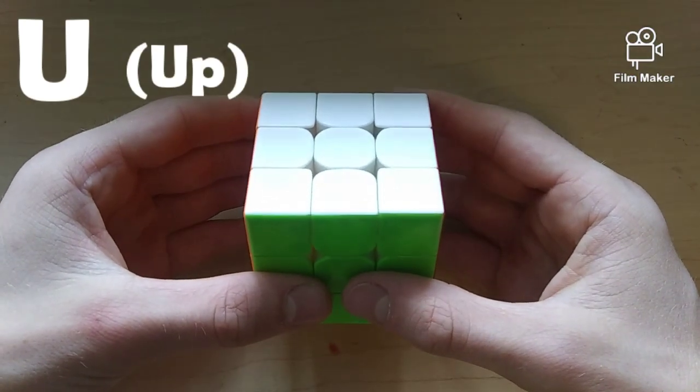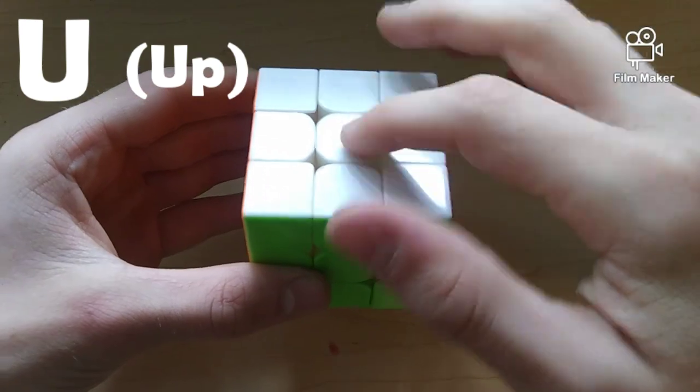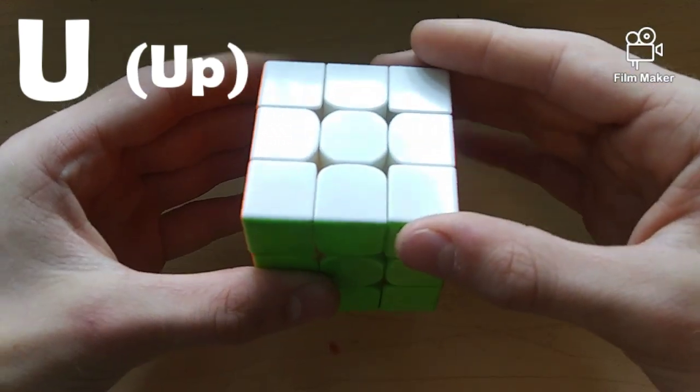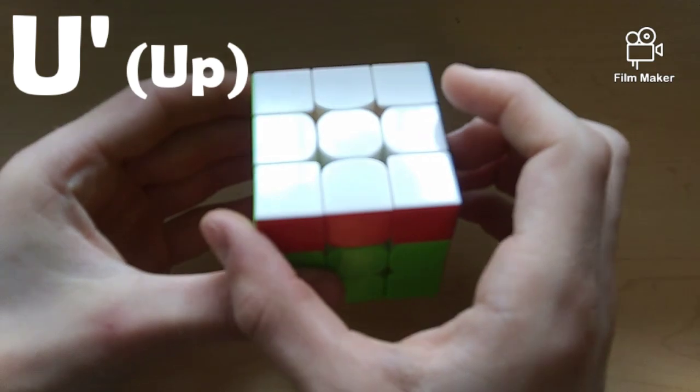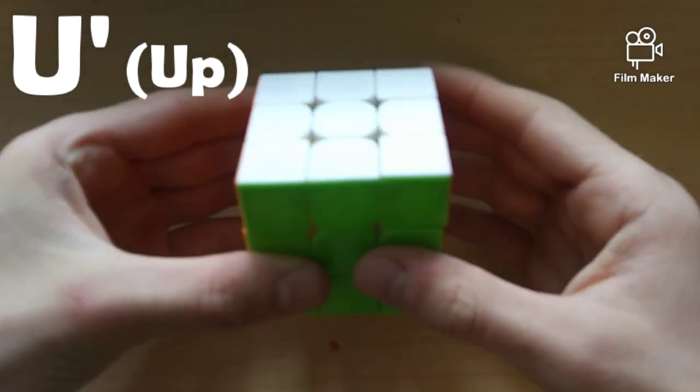Next up, we have U, which means up. So, we're going to look at the upper face of the cube and turn it clockwise. Similar to this, U' is just the opposite direction.